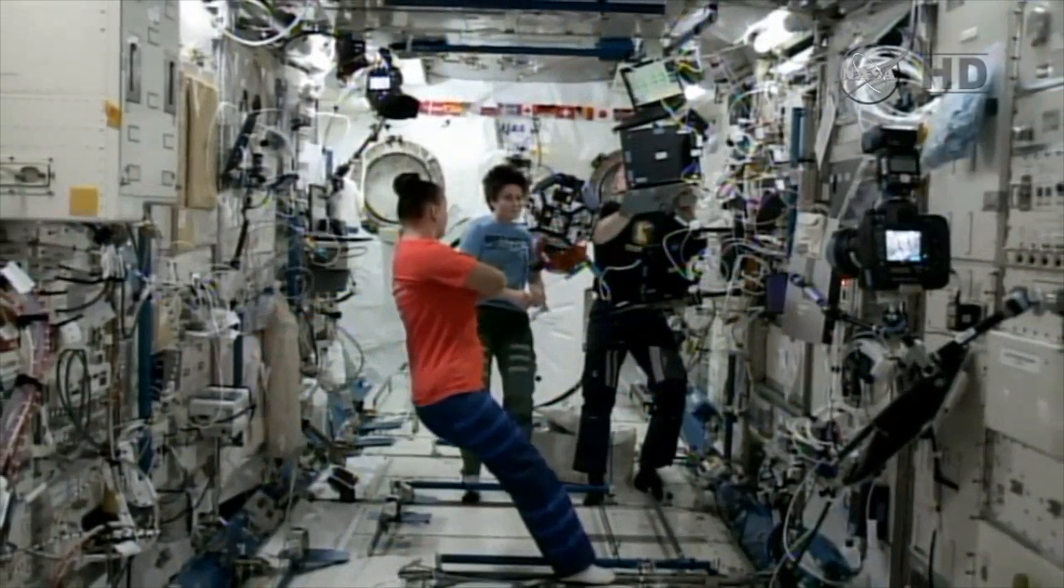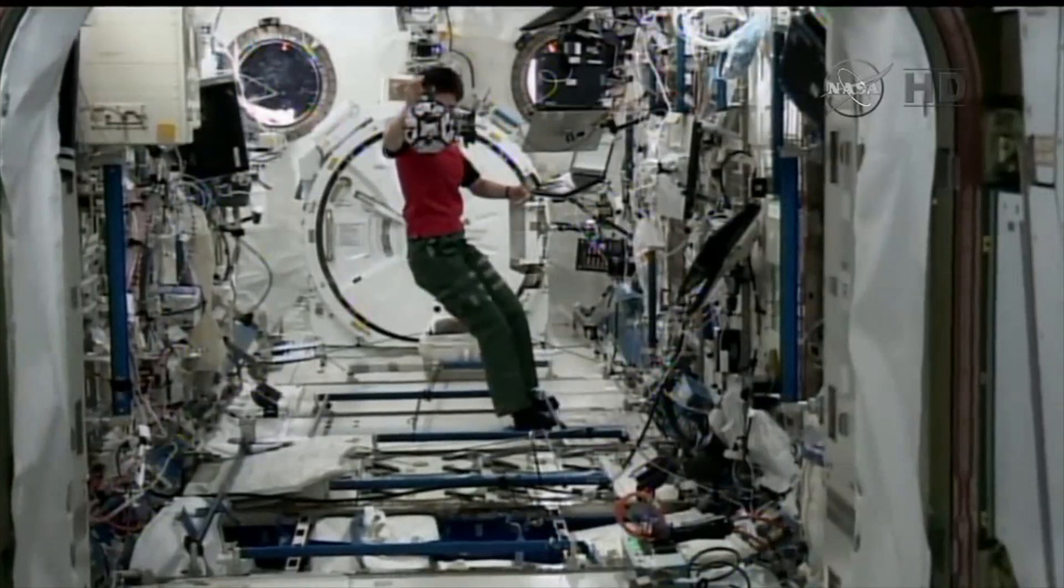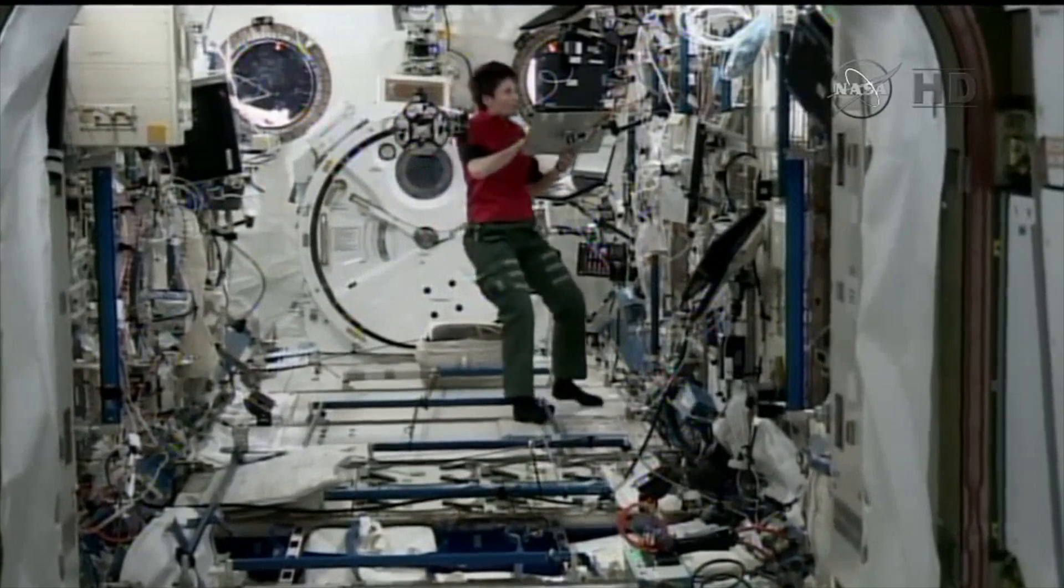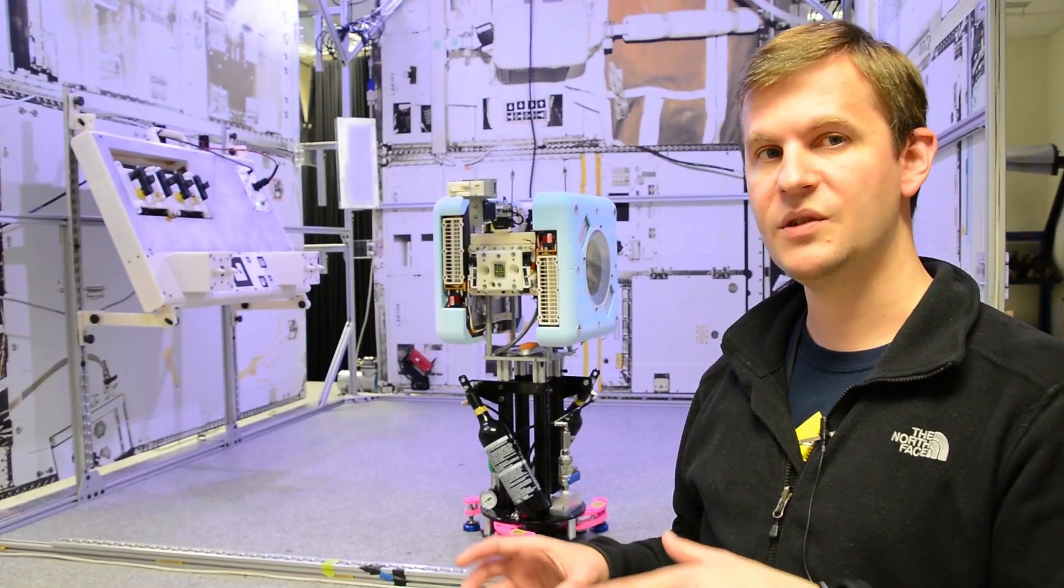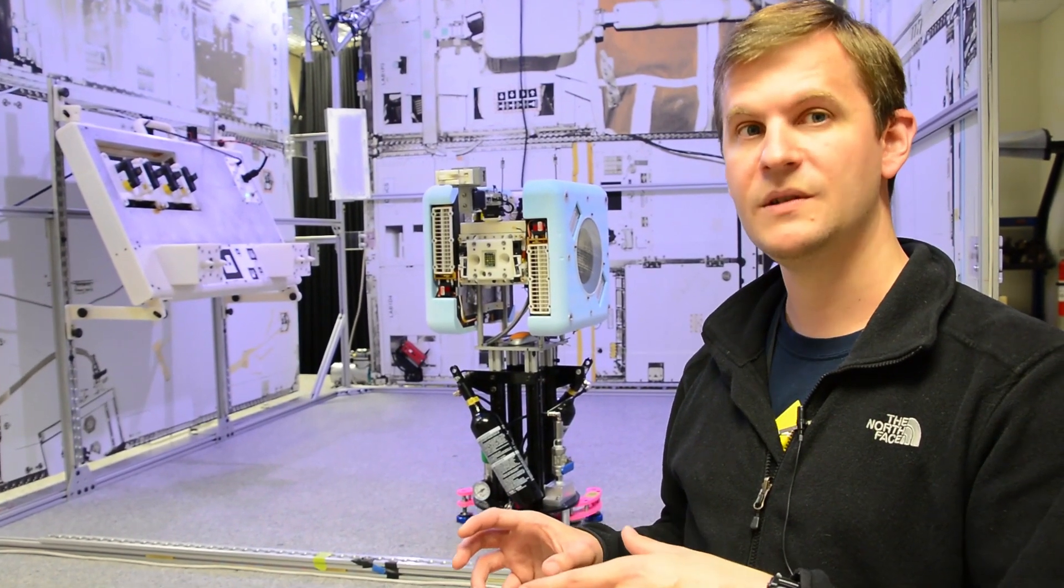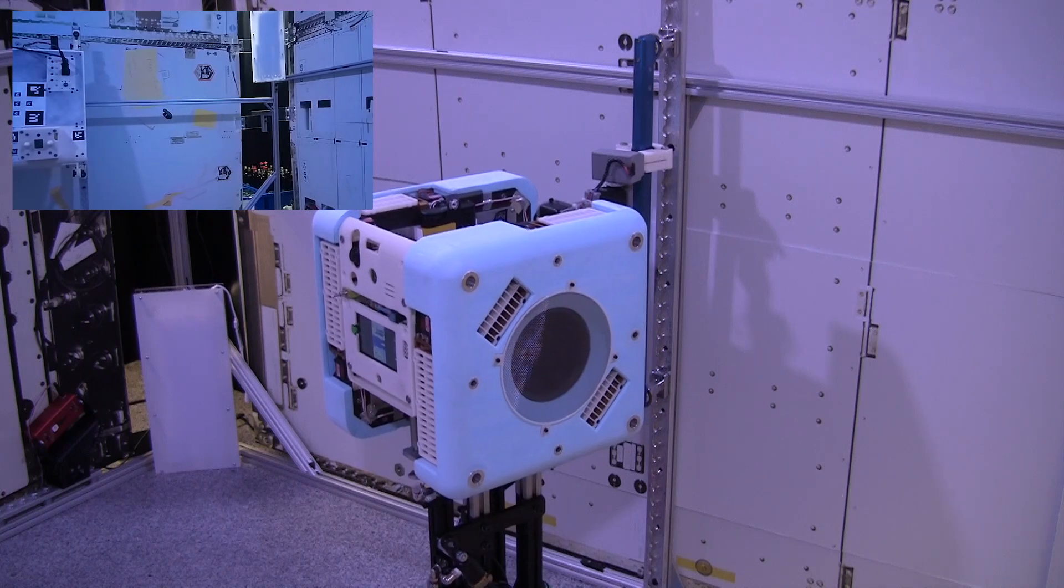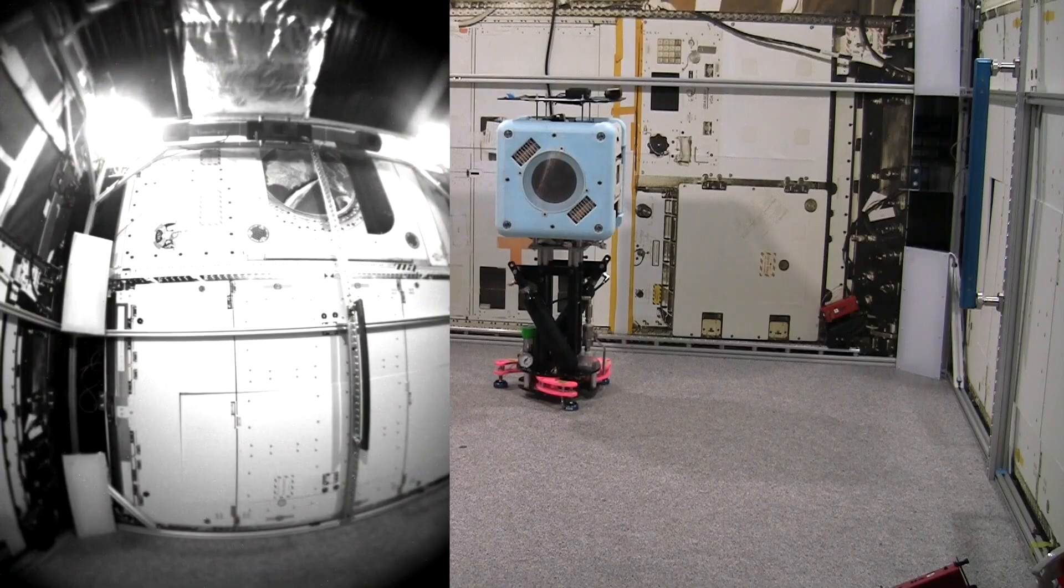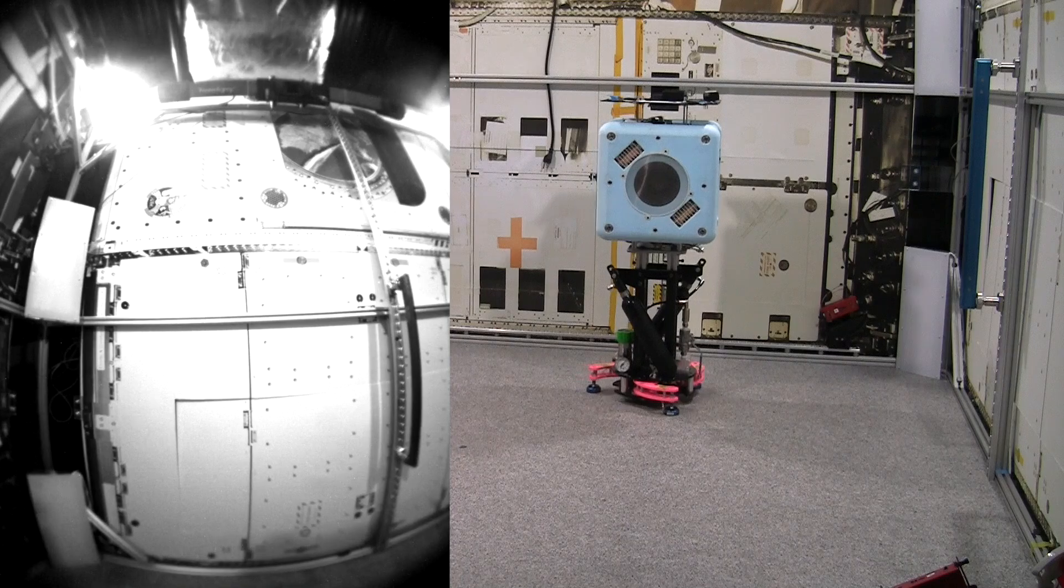The second use case is we want to be able to take video of crew activities. The state of the art for taking video of crew on the ISS is the crew themselves will set up camcorders. We prefer it if the flight controllers can basically move their own camera around and spare the crew that effort.